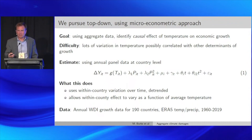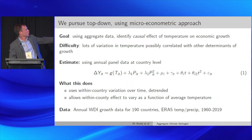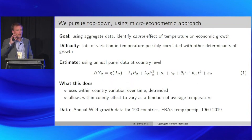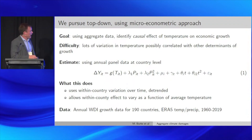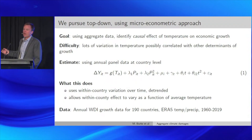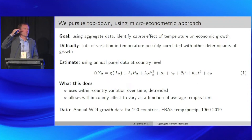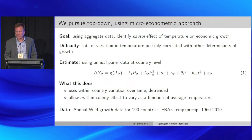We're trying to strip out offending variation and leave what we hope is plausibly exogenous variation in temperature and precipitation. Temperature T and precipitation P — I have a function for temperature estimated non-linearly with simple polynomials, which fit the data well. This uses within-country variation over time after removing trends — standard panel econometrics. Estimating this non-linearly allows the within-country effect to vary as a function of average temperature, so the marginal effect of temperature can differ in hot countries versus cooler countries.